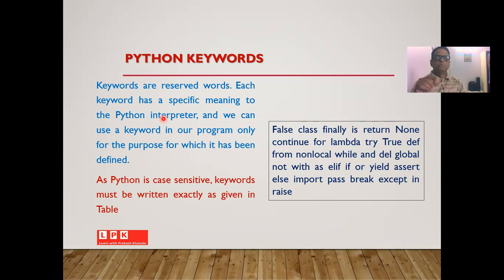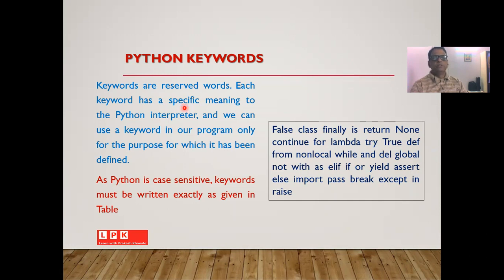Their meaning is predefined — the developer of the language reserves certain words and their meaning is predefined to the compiler or interpreter. In Python also we have certain specific words whose meaning is predefined to the Python interpreter, and we can use these keywords in our program only for the purpose for which they have been defined.